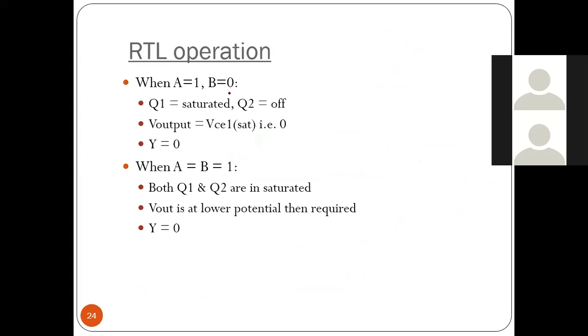Same way, whenever A is 1, B is 0, Q1 will be on so that is saturated. Q2 is off, VCC 1 is 0, so output will be 0.